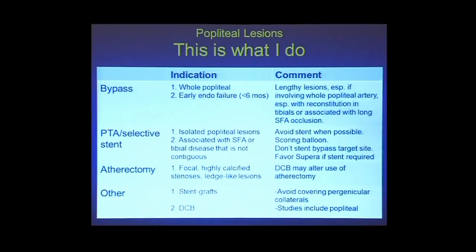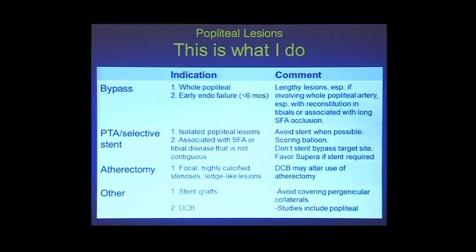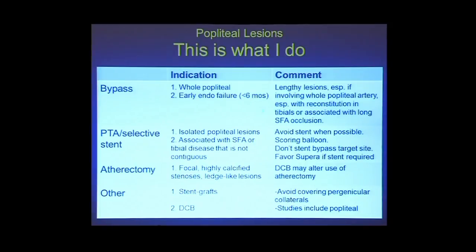I'll start out by saying what I do, and then come back to it at the end of the talk. With respect to popliteal lesions specifically, who do I bypass? If I have a patient where the whole popliteal artery is occluded, especially with reconstitution in the tibials or a very long SFA occlusion from the origin, those are patients where, if they need revascularization, I'm thinking of bypass.